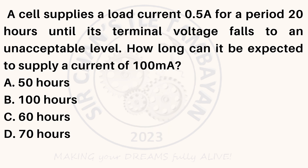A cell supplies a load current of 0.5 ampere for a period of 20 hours until its terminal voltage falls to an unacceptable level. How long can it be expected to supply a current of 100 milliamperes? A. 50 hours. B. 100 hours. C. 60 hours. D. 70 hours.